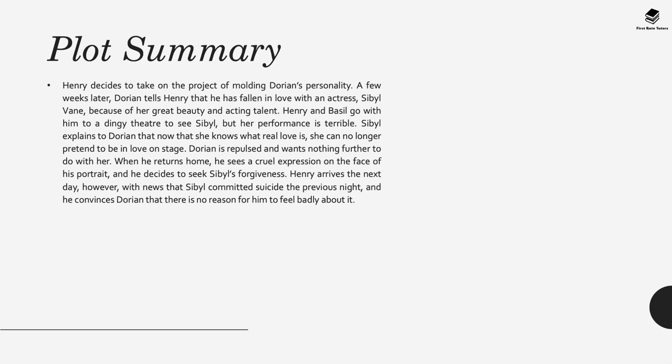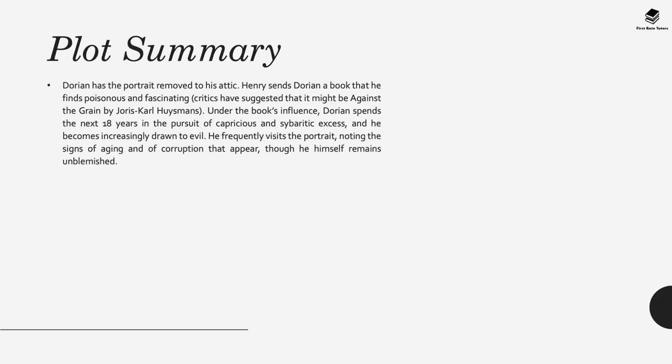Henry decides to take on the project of moulding Dorian's personality. A few weeks later Dorian tells Henry he's fallen in love with an actress called Sybil Vane because of her beauty and acting talent. He invites Henry and Basil to a dingy theatre to see Sybil perform. However her performance is terrible. Sybil explains to Dorian that now she knows what real love is she can't pretend to be in love on stage—this is what robs her of her acting talent. Dorian is repulsed and wants nothing more to do with her. When he gets home he sees a cruel expression on the face of his portrait, so he decides to seek Sybil's forgiveness out of remorse. However the next day he finds out that Sybil has committed suicide, and Lord Henry convinces Dorian there's no reason he should feel badly about this. Feeling guilty but somehow inculcated in this, Dorian removes the portrait and places it in his attic.